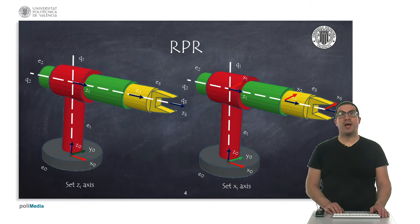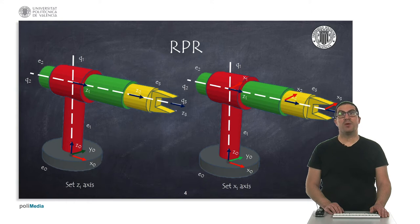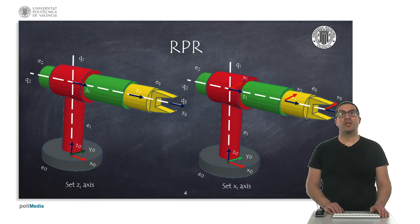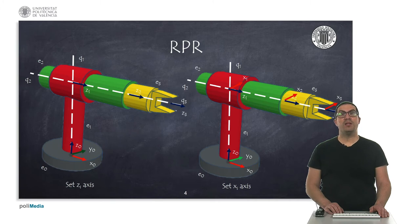The next step is to set the Z axis of the remaining reference frames. According to the method, these must lie on the axis of the next joint. Therefore Z1 is placed on joint 2, Z2 is placed on joint 3, and Z3 has the same direction as Z2, because it is the last axis. We then set the position of the X axis by computing the common normal between consecutive Z axes. X1 is perpendicular to Z0 and Z1, with the intersection point where joints Q1 and Q2 meet.